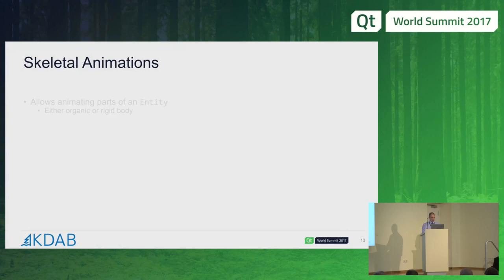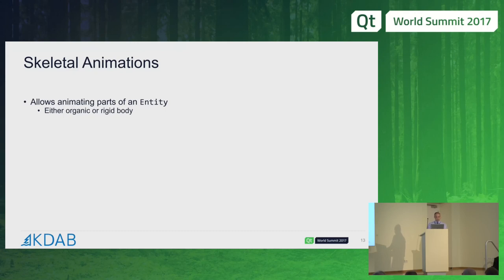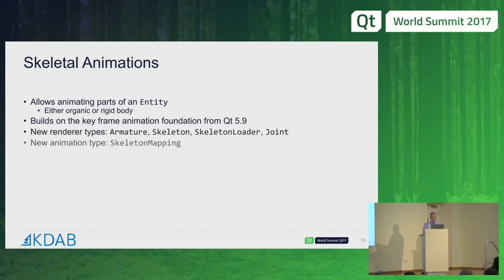Moving on to 5.10 briefly — there's a whole bunch of animation stuff that made it into 5.9 as well, which I have a whole talk on tomorrow. Just to mention briefly: skeletal animations. Qt3D can now do skeletal animations, allowing you to animate parts of an entity. They can be either organic in nature so that they bend and stretch, or they could be rigid body depending on how you set up the skeleton and the mapping to the joints. There are new types for working with skeletons, armatures, and joints.